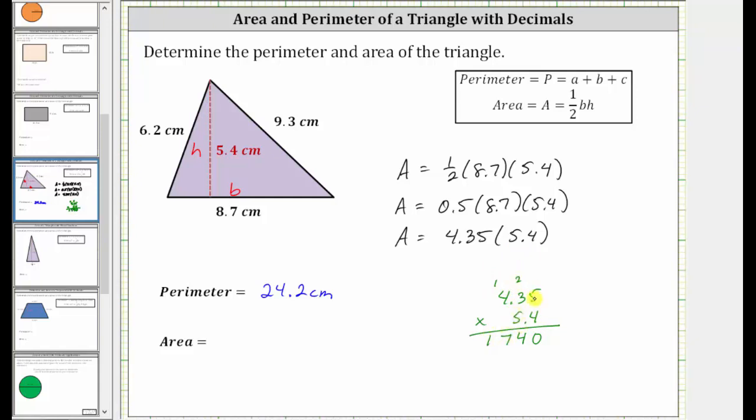Now we multiply by five, but before multiplying by five, we place a zero in the rightmost place value here. 5 times 5 is 25. Record the five, perform an exchange. 5 times 3 is 15, plus two is 17. Record the seven, perform an exchange. And finally, 5 times 4 is 20, plus one is 21.